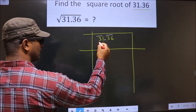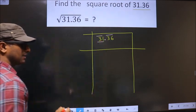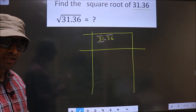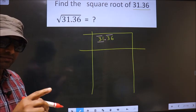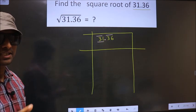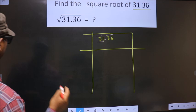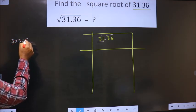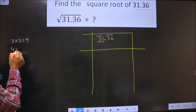Now we have 31. 31 is not a perfect square, so we should check which two perfect square numbers 31 lies between. The perfect square numbers are these: 3 into 3 is 9, 4 into 4 is 16,